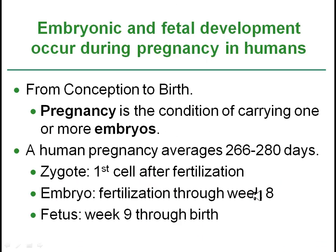On our first slide, you see basically the definition of pregnancy. Humans are set up to carry one, maybe two embryos — we're not really designed like a cat to carry five or six, although you do see that on occasion. The average pregnancy lasts 266 to 280 days, roughly 10 months, and the key terms zygote, embryo, and fetus are defined here as far as when they are technically called what they are.